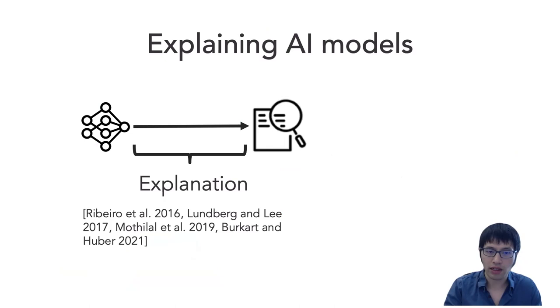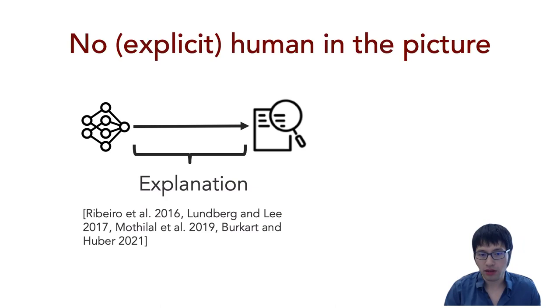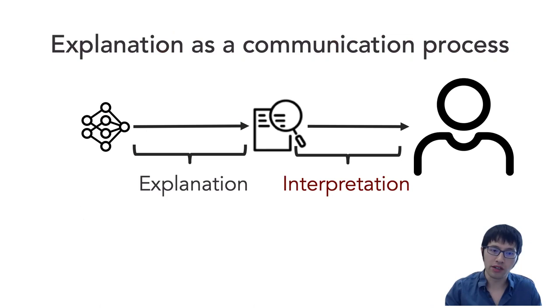This requires us to look at what explanations actually look like. Work on explaining AI models is quite different from what is required for these policies or AI explanations to effectively bridge human and AI. Typically, when we design algorithms of AI explanations, we mostly look at the AI models and try to open the black box with no explicit human in the picture.